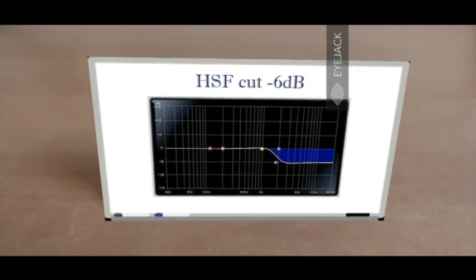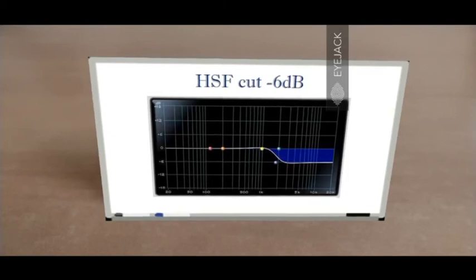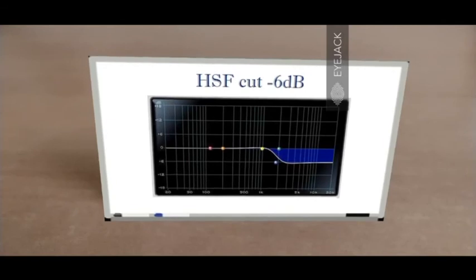Here is the HSF cut filter with negative 6 dB gain — this is just the opposite of HSF boost. The cutoff frequency is still approximately 2000 Hz, which means all the frequencies above 2000 Hz are subjected to a negative 6 dB gain, whereas frequencies below the cutoff are left untouched with a zero dB gain. Frequencies above the cutoff are subjected to an attenuation of negative 6 dB.